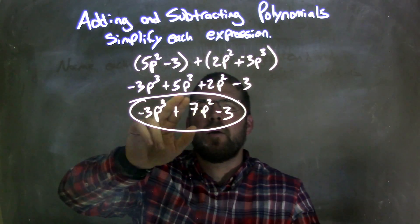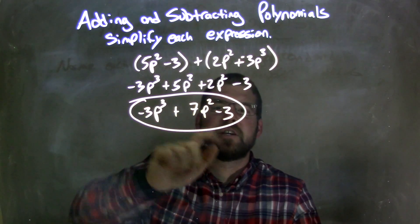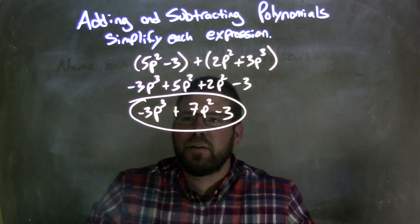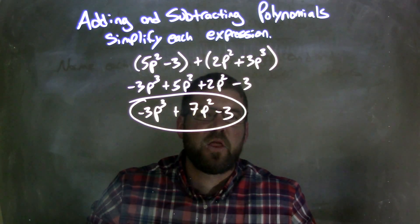So from there, the only things I can combine is 5p squared plus 2p squared, which is going to be 7p squared. So now we have our final answer of negative 3p to the third plus 7p squared minus 3.